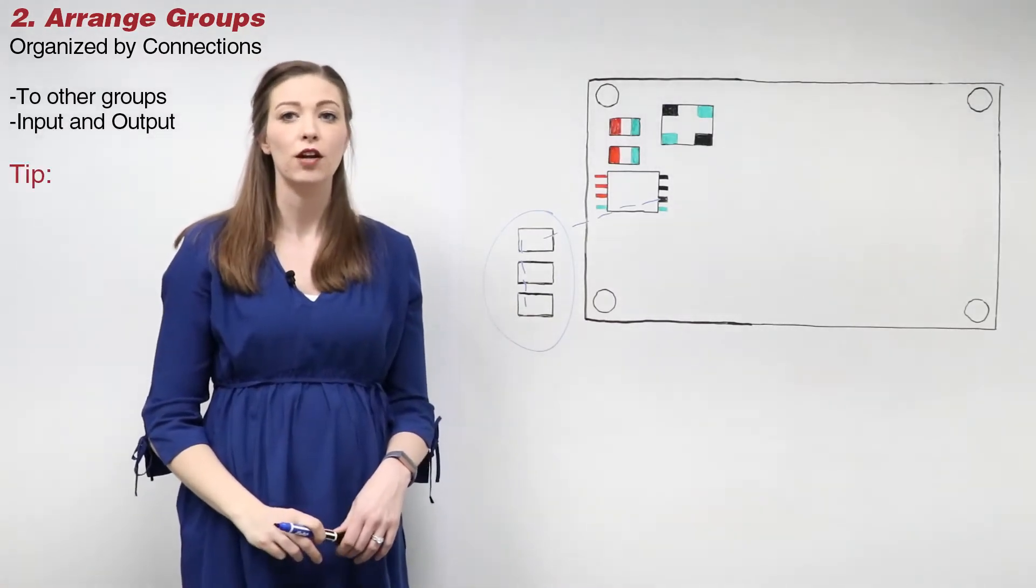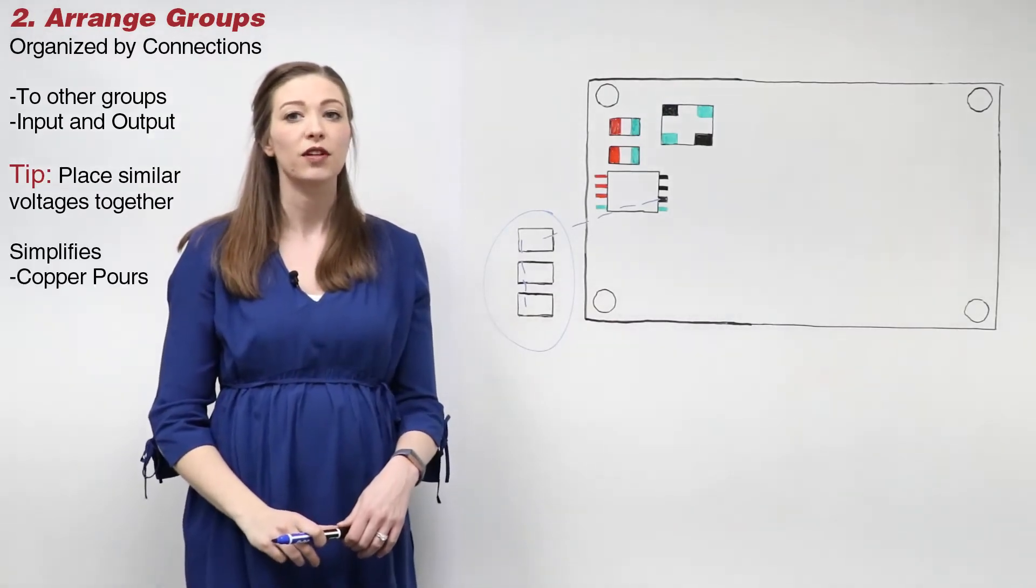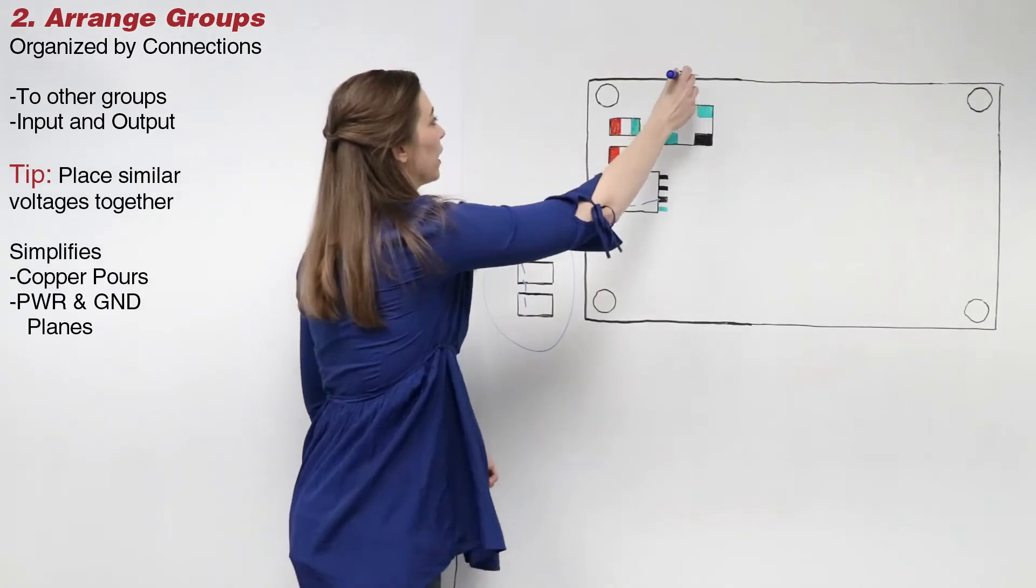Here's a tip. Try to organize circuits with similar voltages near each other. This will simplify decisions with copper pours or power and ground planes.